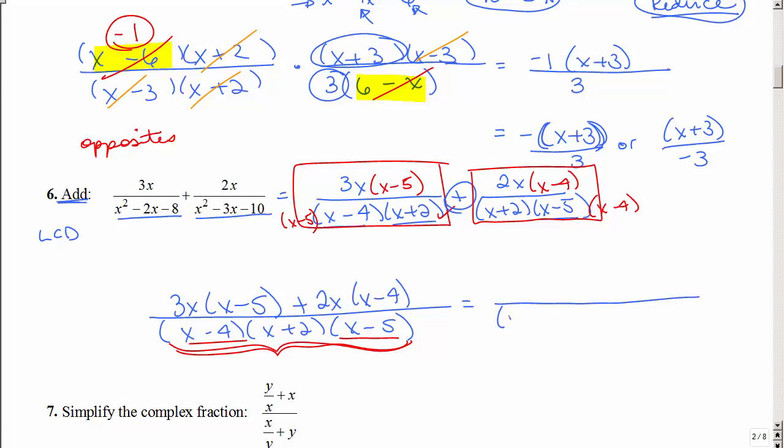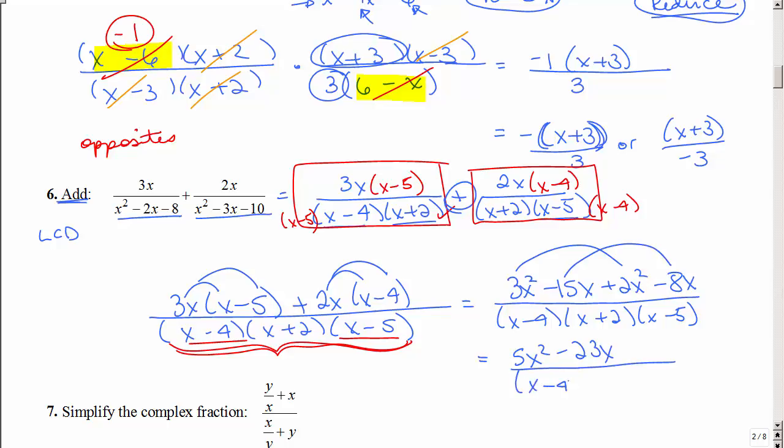Okay, so at this point, I'm going to keep this big ugly denominator. Please do not multiply all that out, not necessary, but I do need to distribute the top part. And then I'm going to collect like terms on top. So I have 5x squared minus 23x over that very, very ugly denominator.